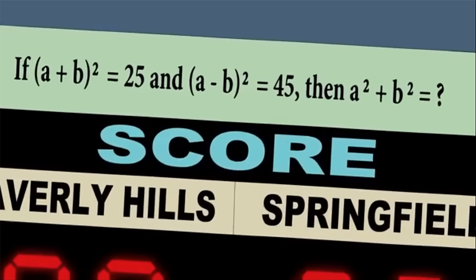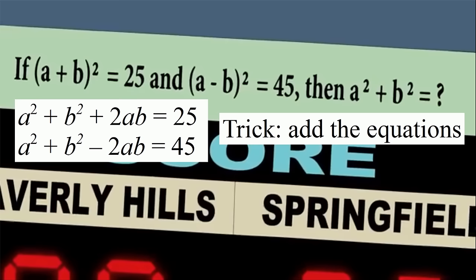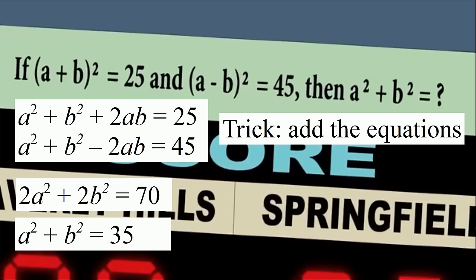Here we have another system of equations: a plus b squared equals 25, and a minus b squared equals 45. We need the value of a squared plus b squared. Instead of solving for a and b individually, there's a trick: expanding both equations, the only difference is one has a positive 2ab and the other a negative 2ab. Adding them gives 2a squared plus 2b squared equals 70, so a squared plus b squared equals 35.